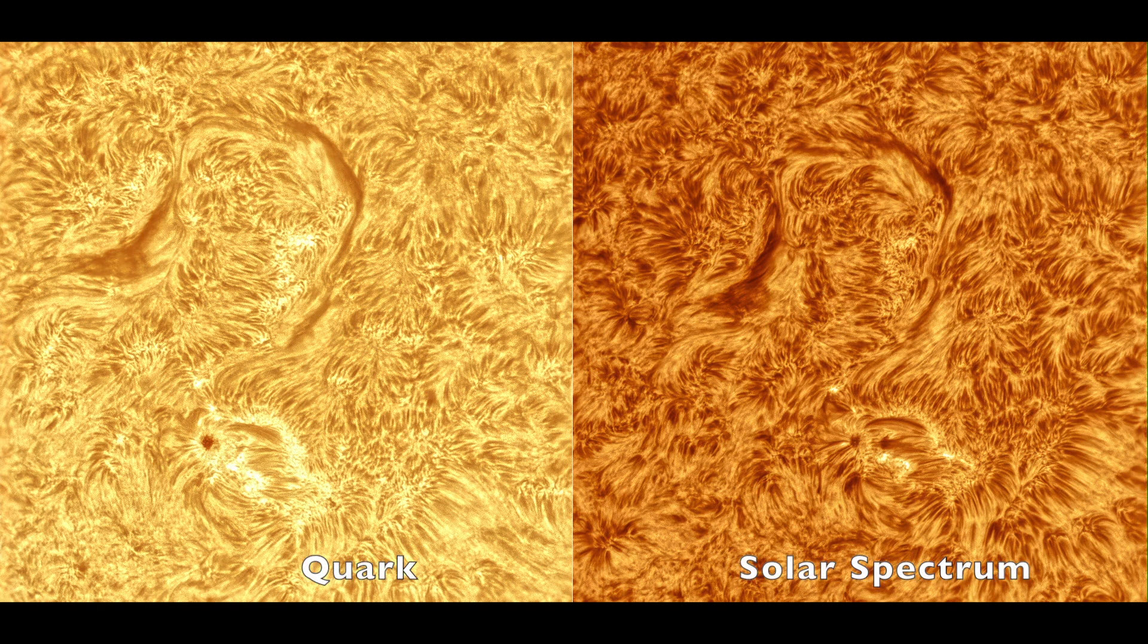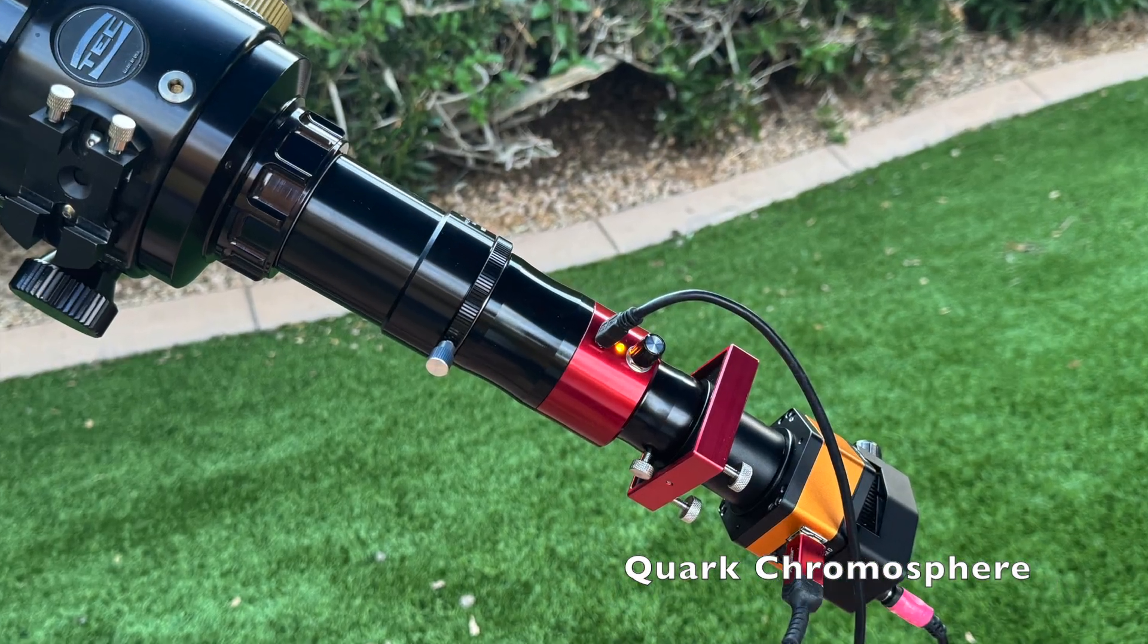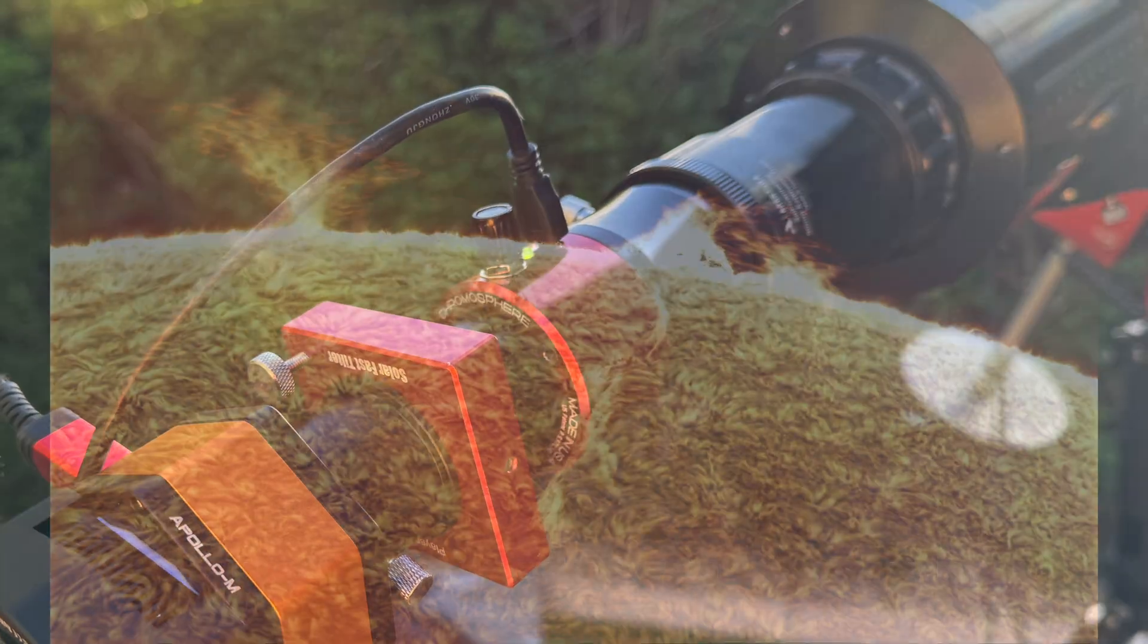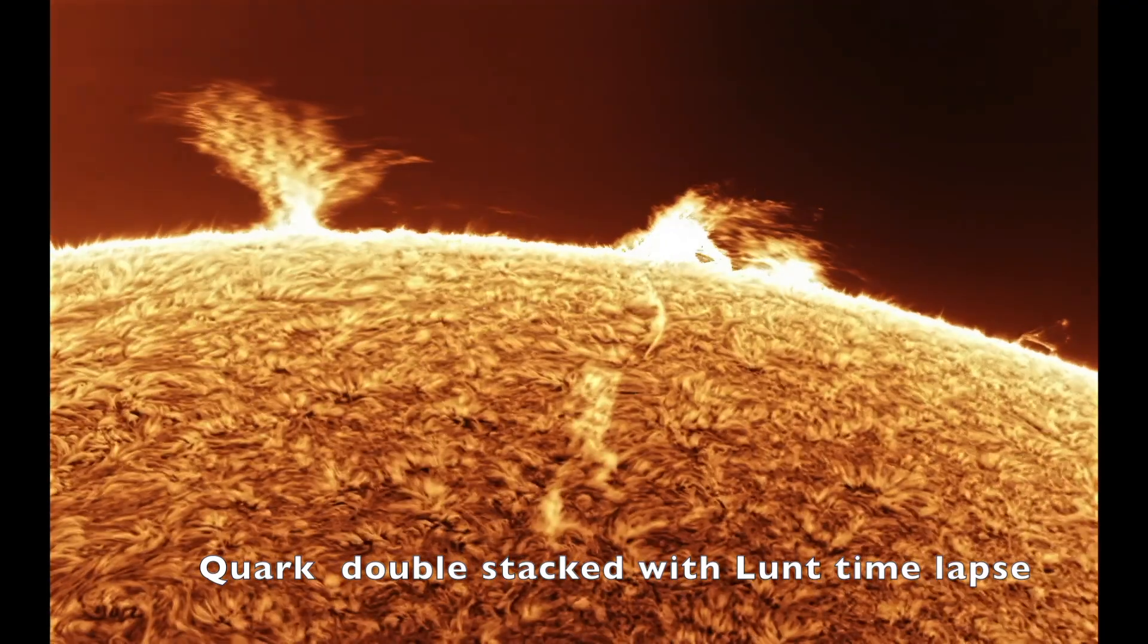Here's the short version. The Quark is an affordable grab-and-go entry into hydrogen alpha viewing if you already have a small refractor. Many owners get great results while others report variability, tuning drift, and uneven contrast.